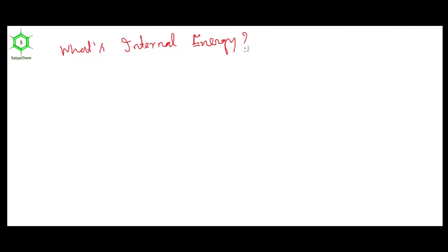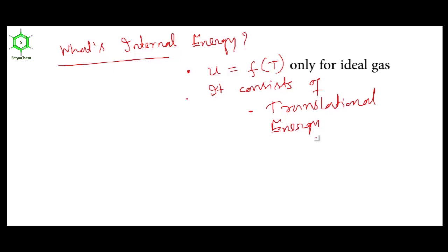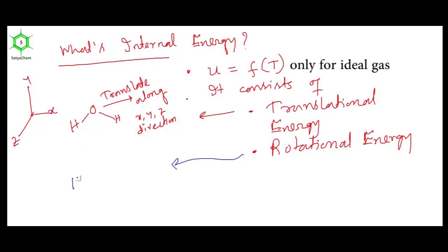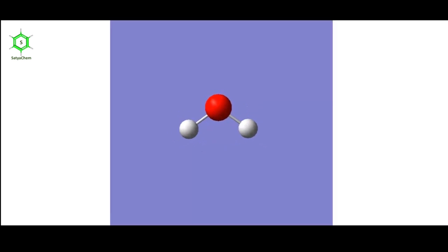What is internal energy? Internal energy is a function of temperature, which is only for ideal gas. It consists of translational energy and rotational energy. For example, a water molecule can translate along x-axis, y-axis, and z-axis, and the energy corresponding to this translation is translational energy. The water molecule also rotates around x-axis, y-axis, and z-axis, and the corresponding energies are called rotational energy. Next is vibrational energy — the water molecule has two OH bonds which can vibrate, and the corresponding energy is vibrational energy.